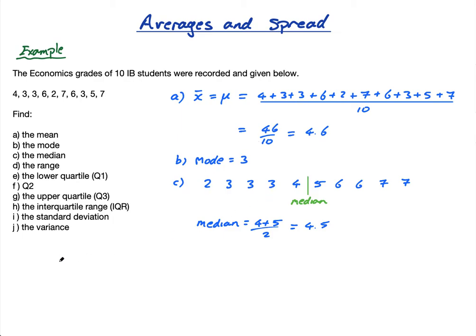Part D, the range. What is the range? The range is the biggest minus the smallest. So simply 7 minus 2 equals 5. The range is 5.